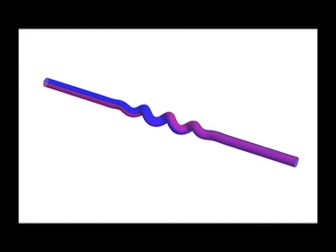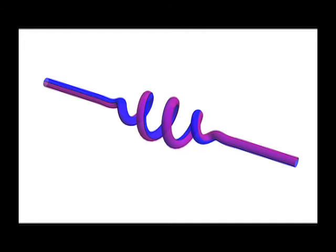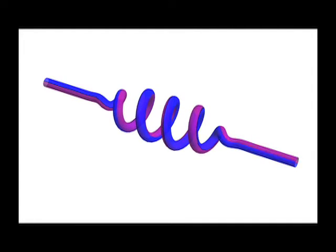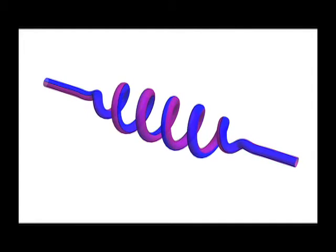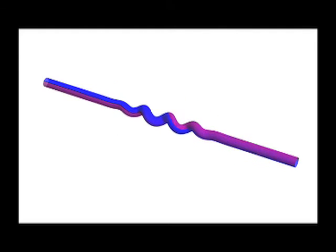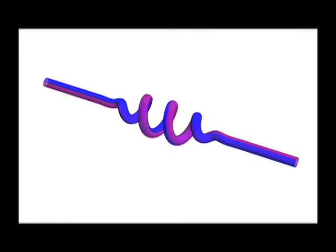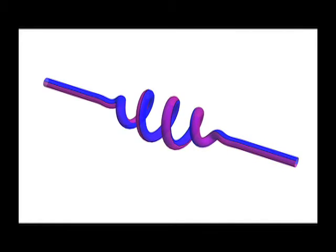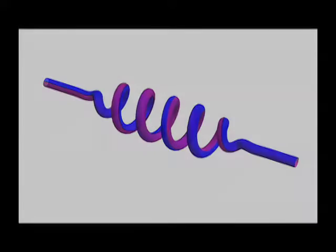This animation illustrates how the shape of the curve affects parallel transport. The colors indicate the orientation of a frame prescribed at the left end and parallel transported over the entire curve. Observe how the frame at the right end turns as the torsion of the curve increases. This illustrates the link between the twisting of a rod and the resulting torsion on its centerline.